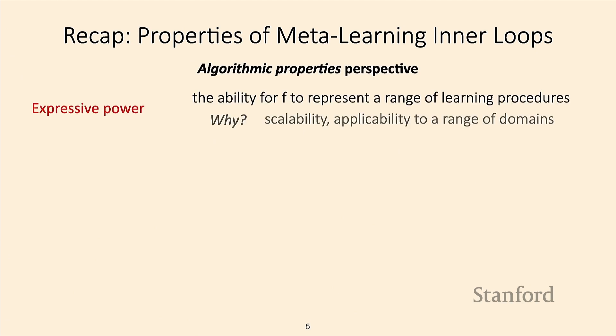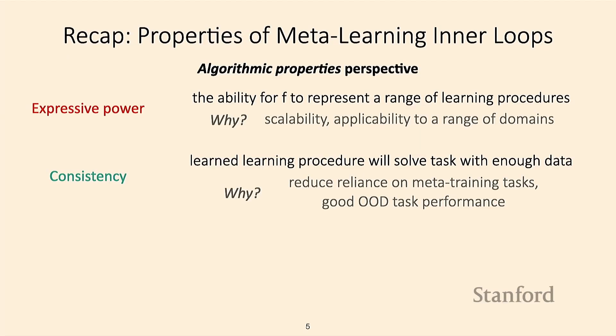Specifically, we were talking about properties of the inner loop of that algorithm — the learning procedure it gives you. There were two different properties we focused on. The first was the expressive power of the inner loop: can it represent a wide range of learning procedures? The second was the consistency of that inner loop — statistical consistency, meaning if you give it enough data, can you expect it to solve the task and reach a consistent estimator of the task-specific parameters?